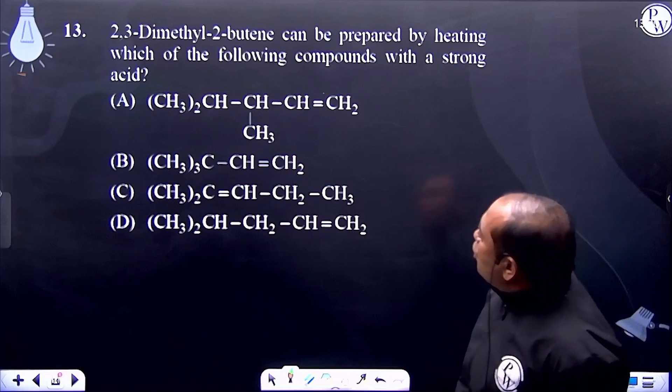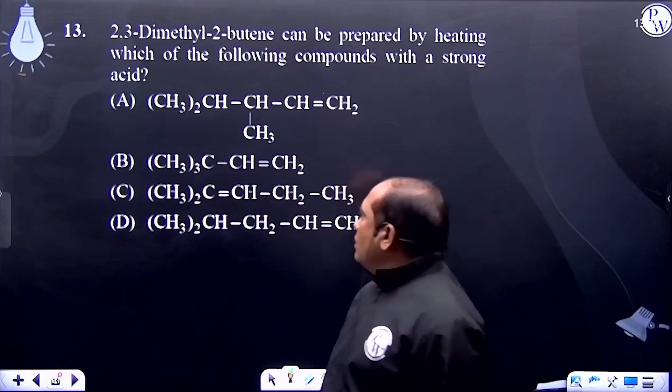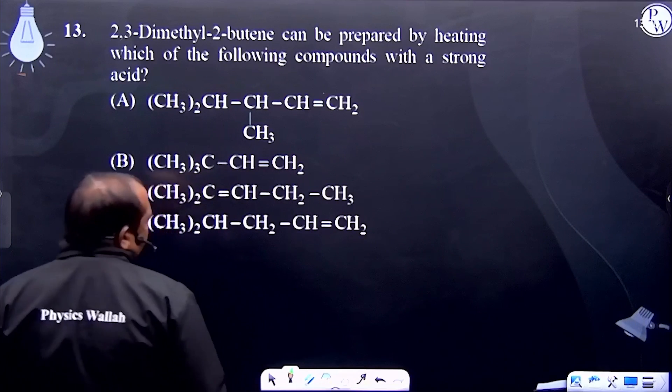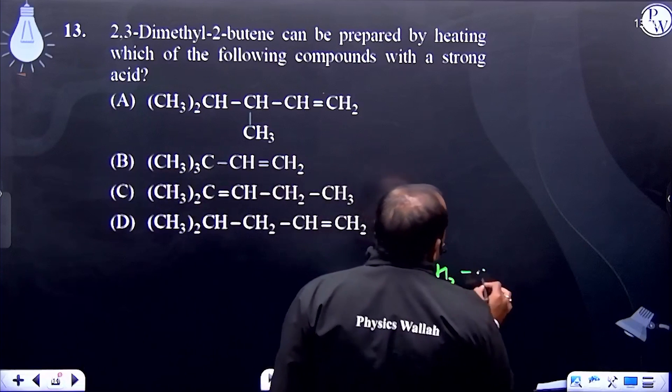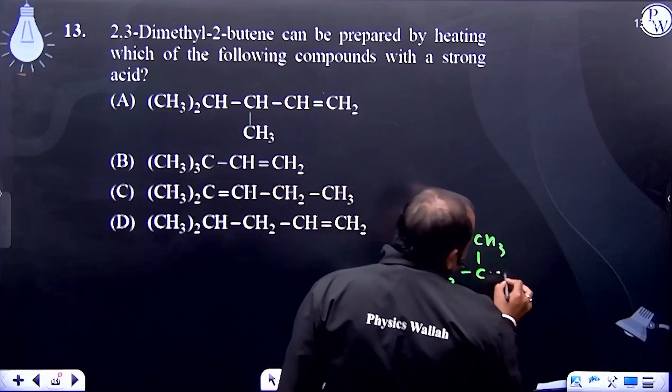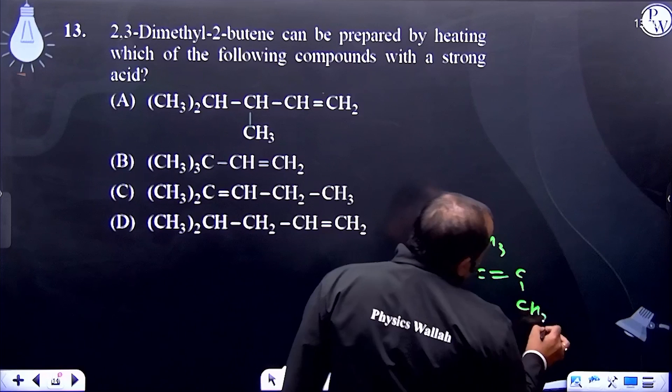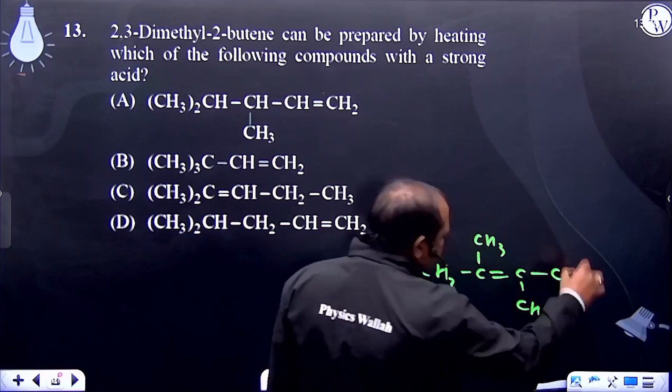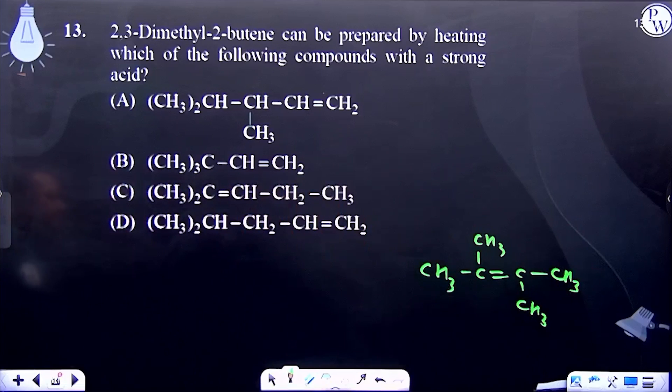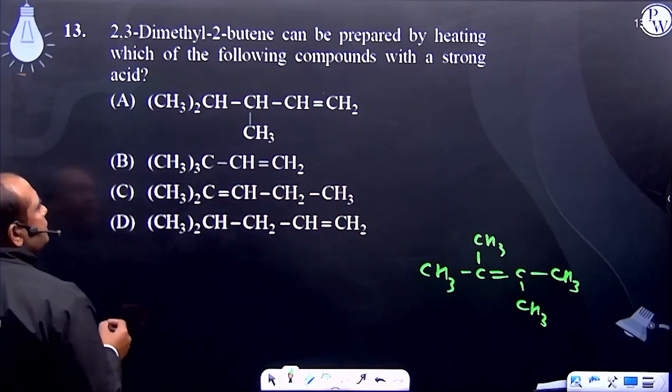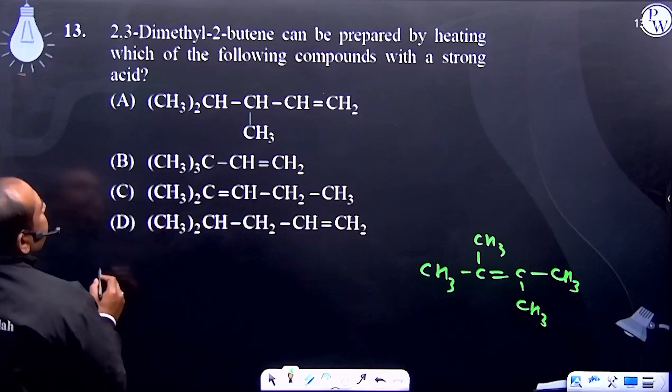The product is 2,3-dimethylbutane from alkene. This is an isomerization reaction. Let's check option A first.